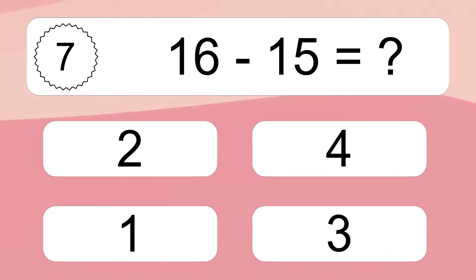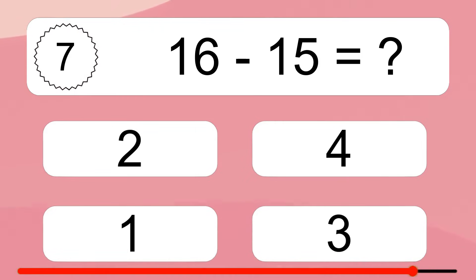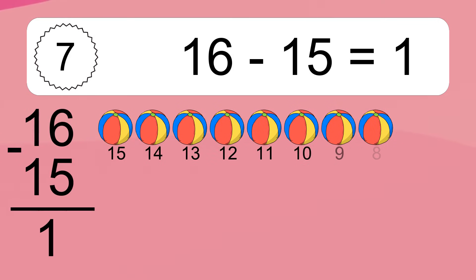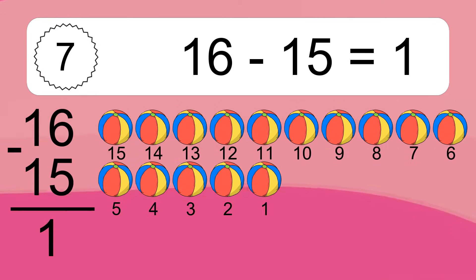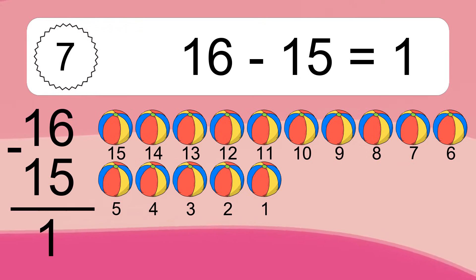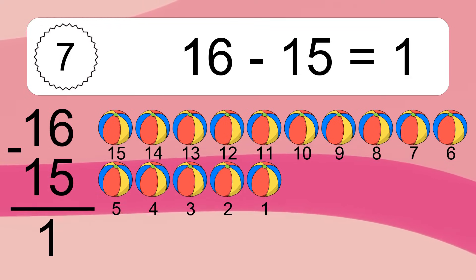16 minus 15 equals what? 16 minus 15 equals 1. Let's count it: 15, 14, 13, 12, 11, 10, 9, 8, 7, 6, 5, 4, 3, 2, 1.